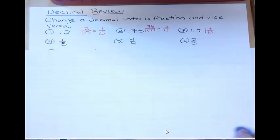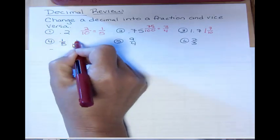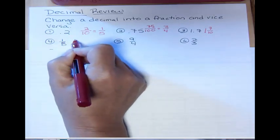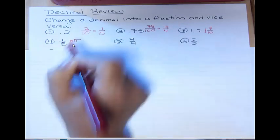What if you want to go the other way? You want to change a fraction into a decimal? I just divide the top number, that's the numerator, by the bottom number, that's the denominator. So I'm doing 1 divided by 8.